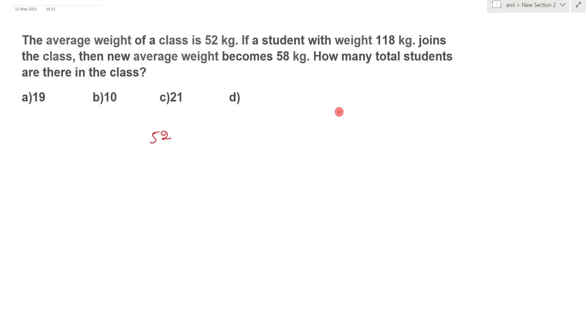Initial average is 52, total initial students is n. Final students will be n plus 1. And the final total weight, if you calculate it, will be 58 into (n+1).